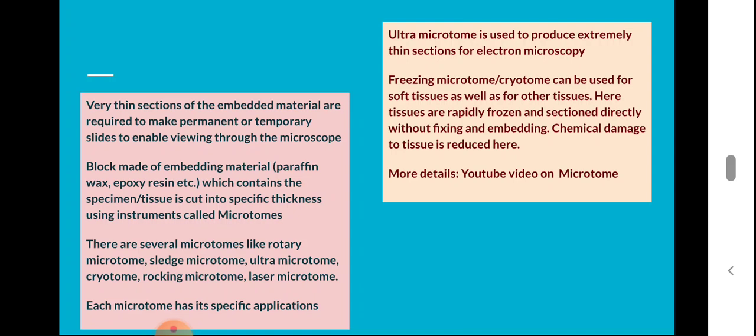The thickness of the section is very important while viewing the specimen through the microscope — the thinner the section, the greater the clarity, and we will be able to see the details of the tissues and cells. The block made of embedding material such as paraffin wax or epoxy resin is cut into a specific thickness using instruments called microtomes, where we can adjust and specify the thickness.